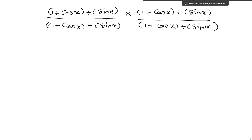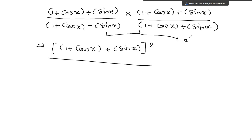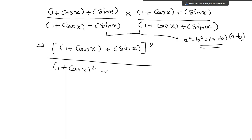In the numerator we have 1 plus cos x plus sin x to the whole square. In the denominator we have a minus b times a plus b, which equals a squared minus b squared. So the denominator becomes 1 plus cos x to the whole square, minus sin x to the whole square.